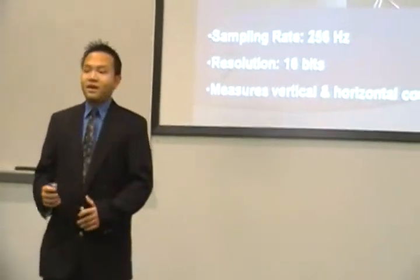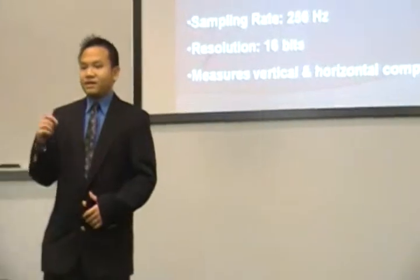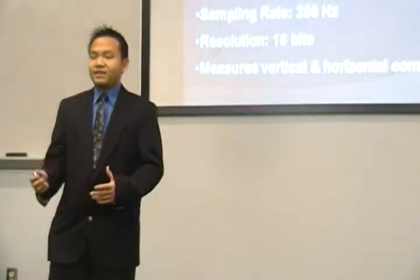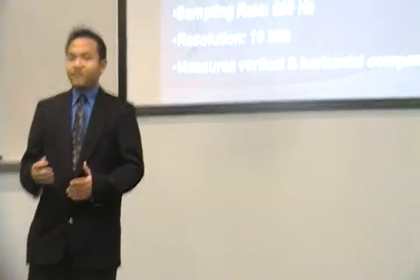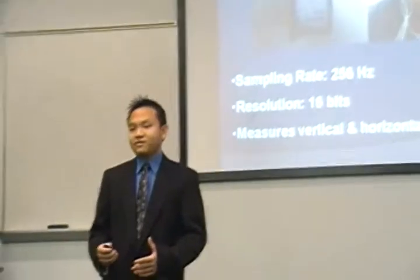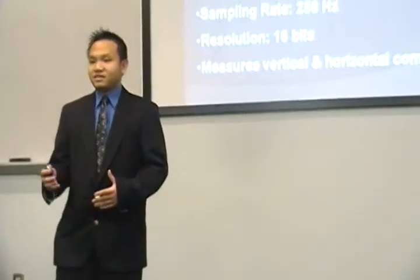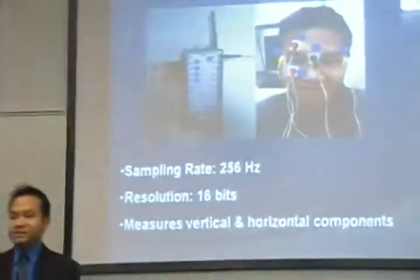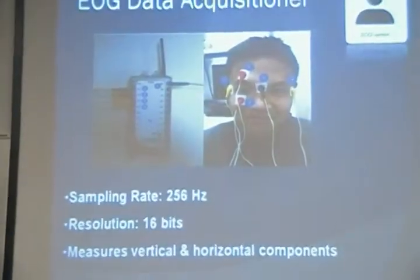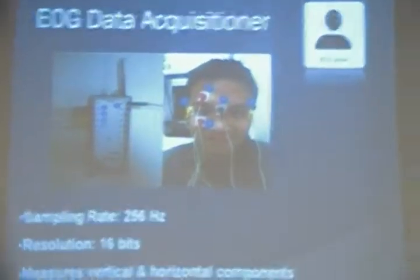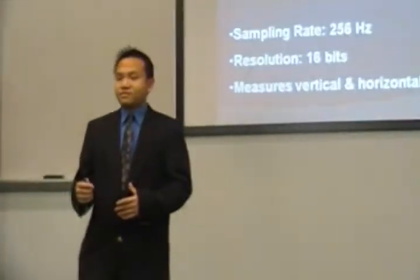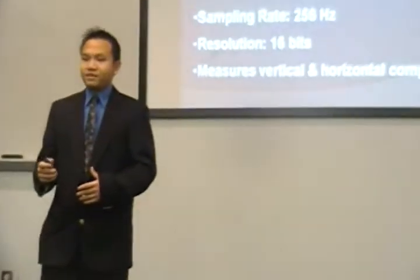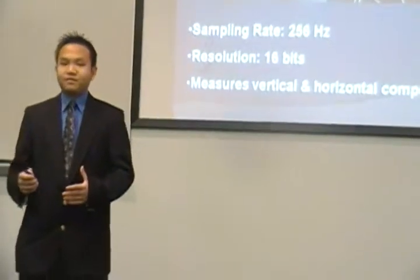The bioradio gets the EOG signal from our eyes, amplifies it, then converts it into a digital signal at a sampling rate of 256 Hz and a 16-bit resolution. This 16-bit sample is then converted into a floating point number that serves as user input for the project.